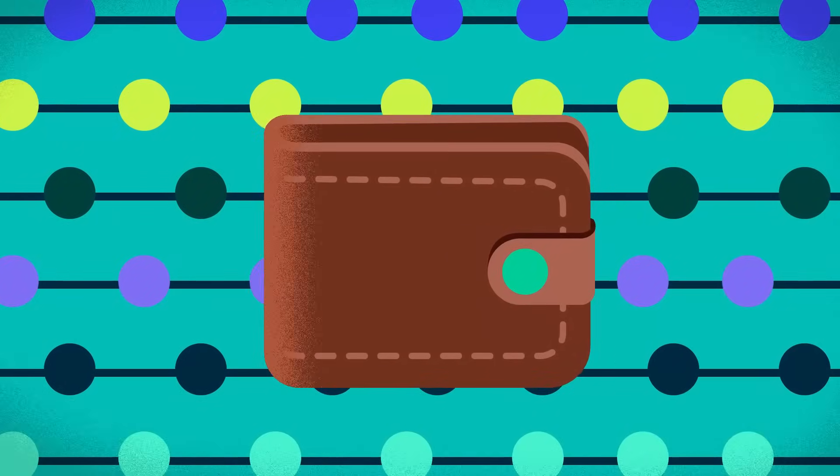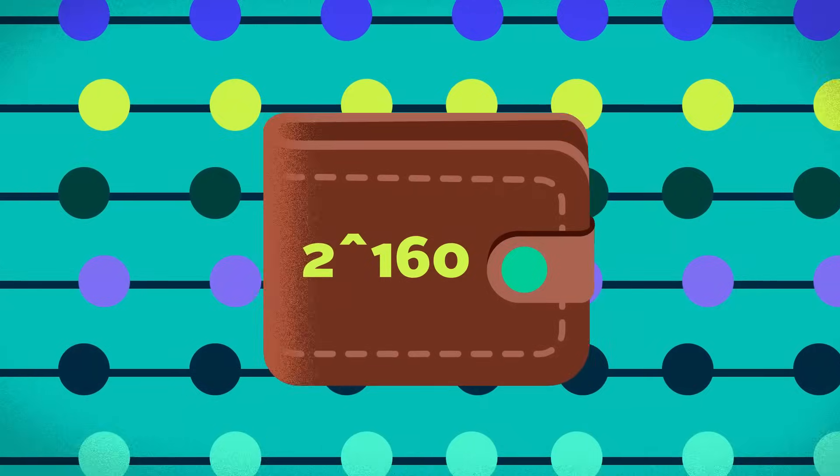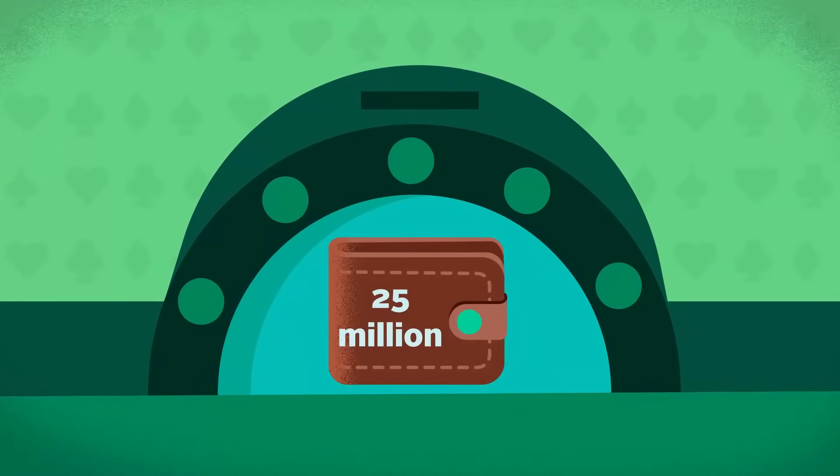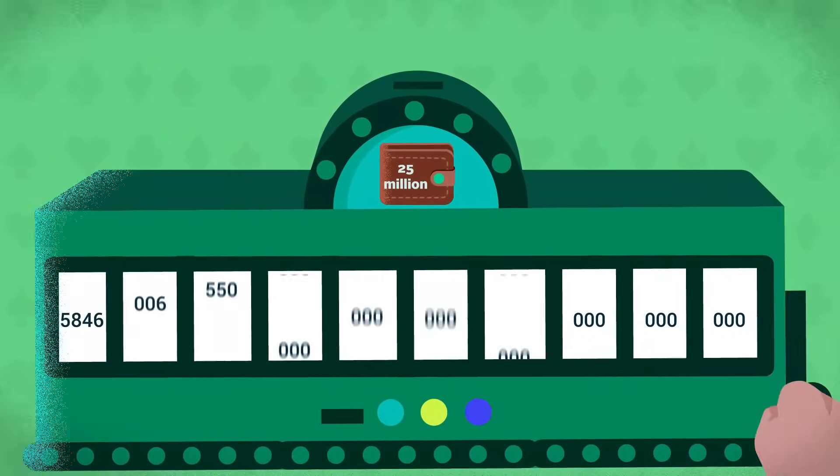As mentioned earlier, there are 2 to the power of 160 or over 1.4 quinticillion possible wallet addresses. Even with 25 million funded addresses, the odds of generating a private key to any of these wallets, while more likely, is still 1 in 5.8 nonillion.